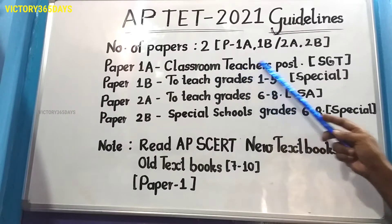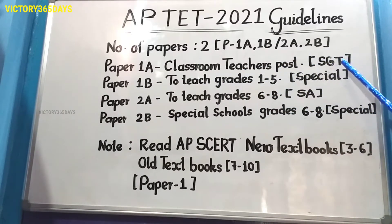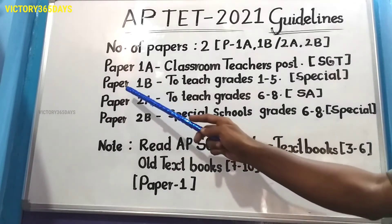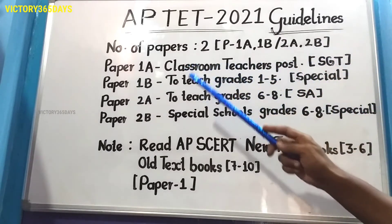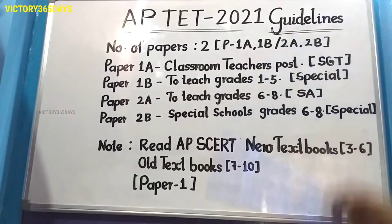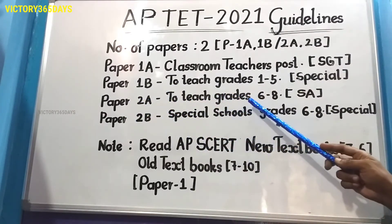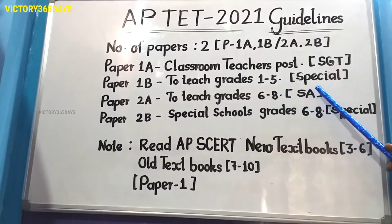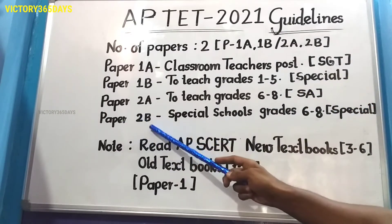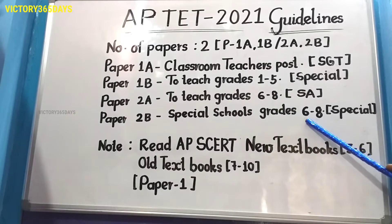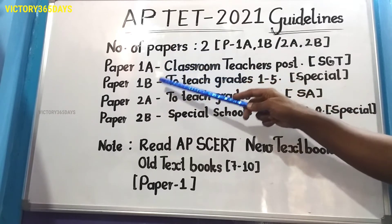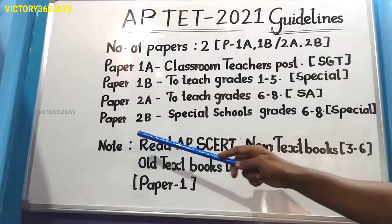Paper 1A is for SGT and diet aspirants. Paper 1B is for special schools — for Divyangjan — to teach grades one to fifth. Paper 2A is for school assistant and beard aspirants to teach grades six to eight. Paper 2B is for special schools category to teach grades six to eight in the special category.